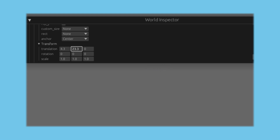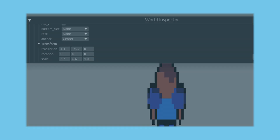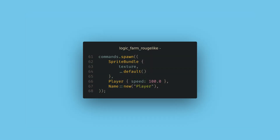Also our custom resources and components don't show up here by default, and our entities have horrible names. To fix the name problem, we can add a Bevy built-in component called name to all of our entities. If you're using the inspector, I highly recommend doing this, otherwise the name component doesn't really do anything by default.